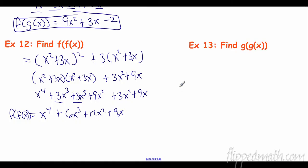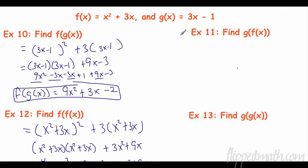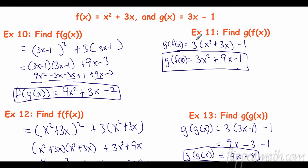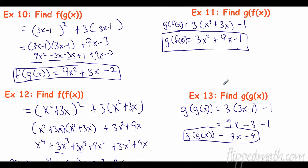Now try problems 11 and 13 all by yourself, and then we'll see how you did. In number 11, we have 3 and our x — we're putting in f of x, so x squared plus 3x minus 1. Distribute: 3x squared plus 9x minus 1. There were no like terms, so it wasn't a big deal. Down here, number 13, composing with itself: 3 times 3x minus 1, minus 1 — that's 9x minus 3 minus 1 — and we get 9x minus 4.